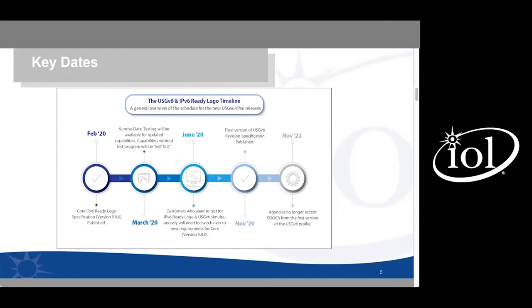On the USGv6 side, in November of 2020, all documents associated with USGv6 revision one, or R1, were published. For USGv6 there is a two-year window to comply with the new profile, meaning you can still test for the original version. However, if you want to test for both Ready Logo and USGv6 simultaneously, you will need to test for the new requirements.